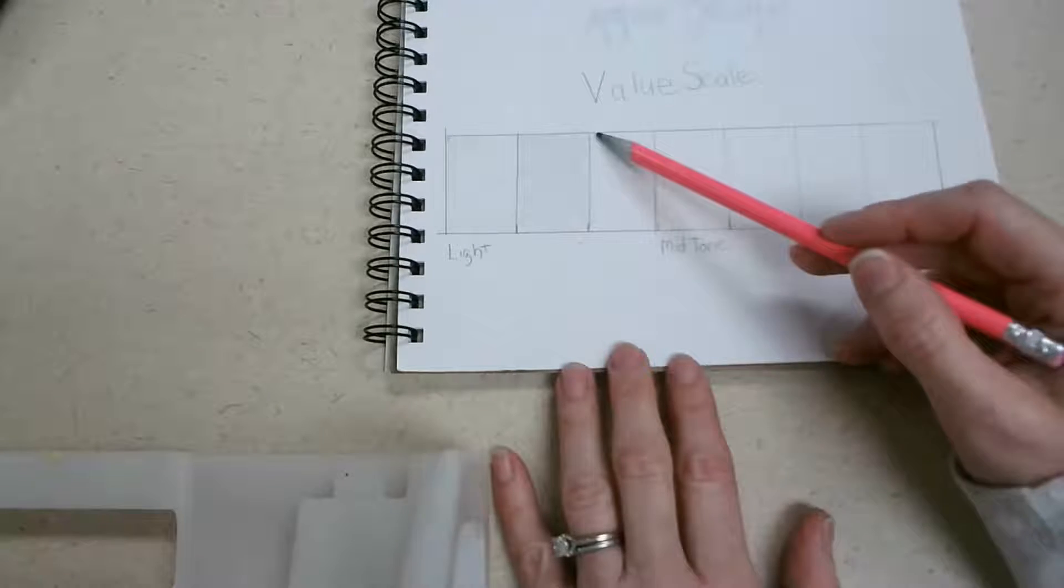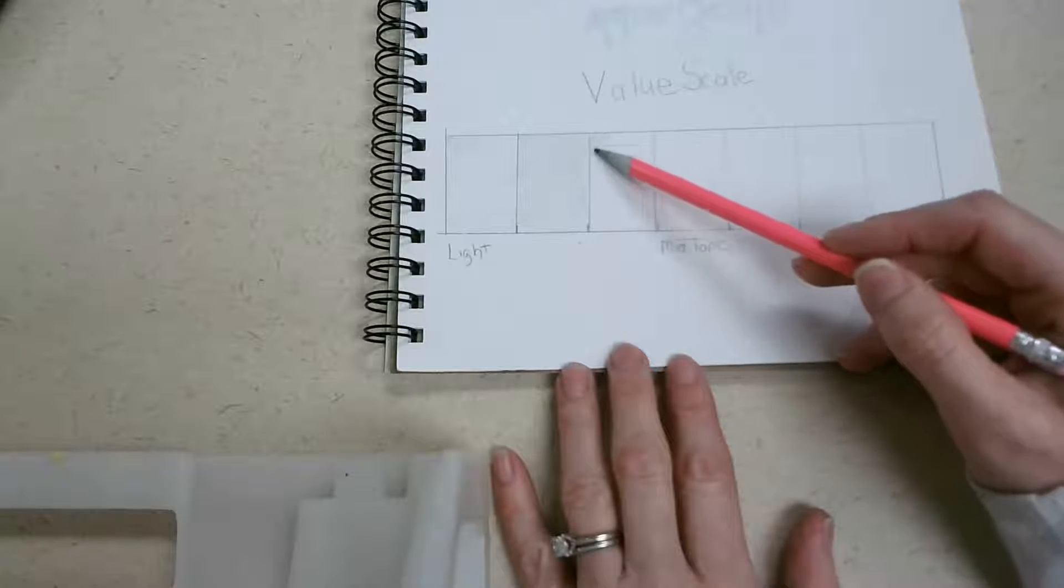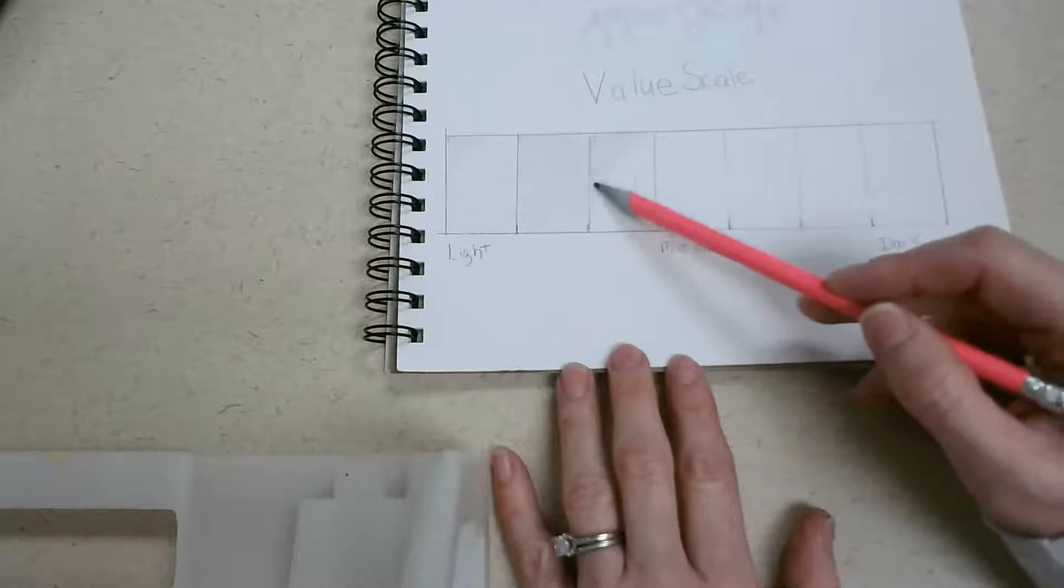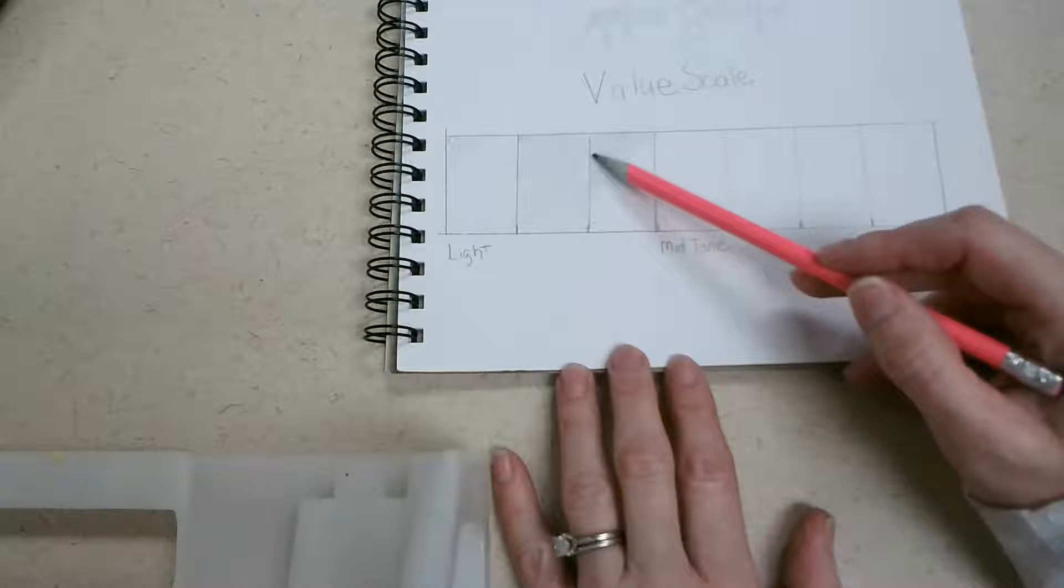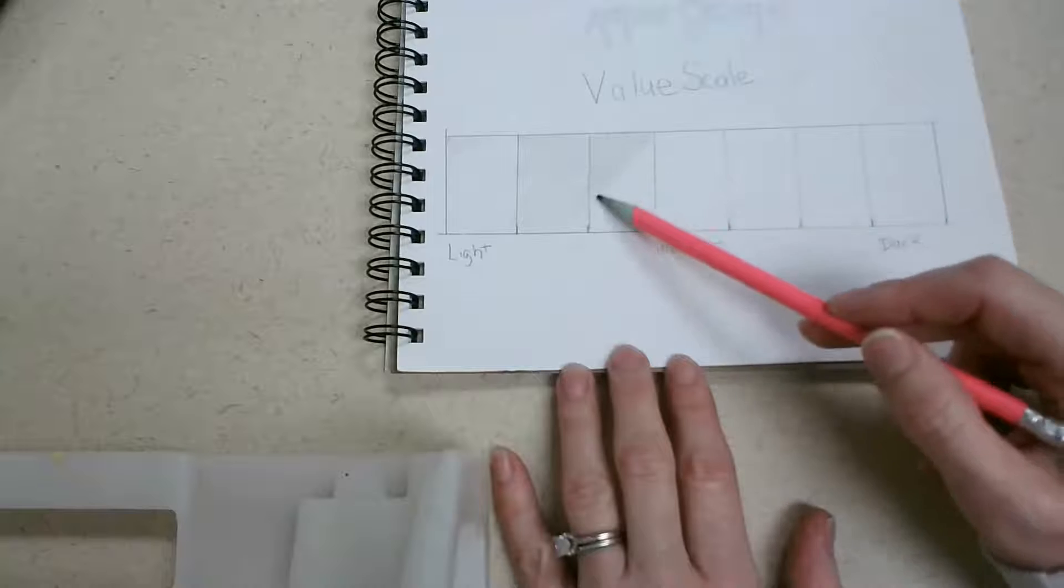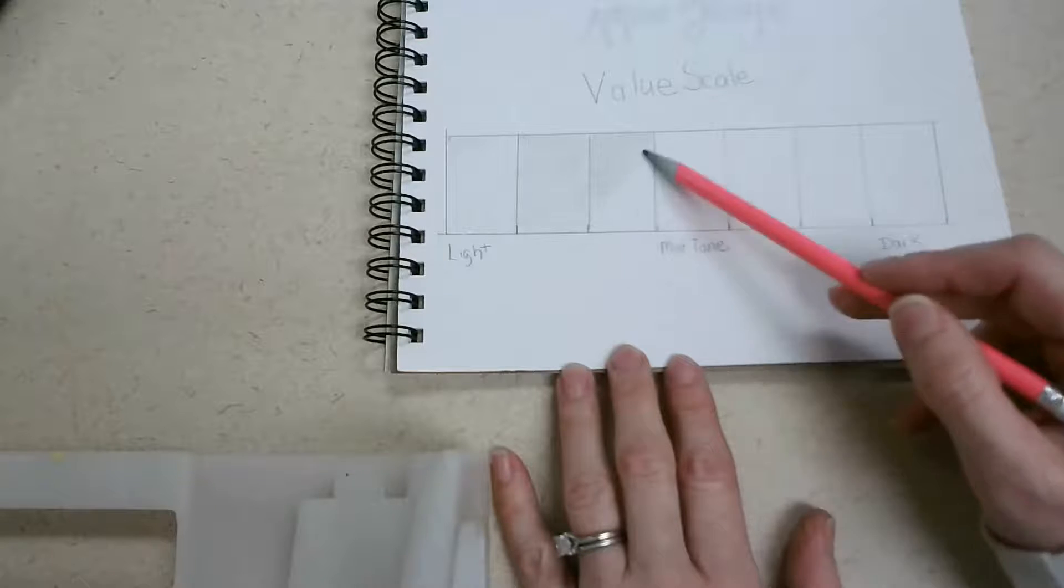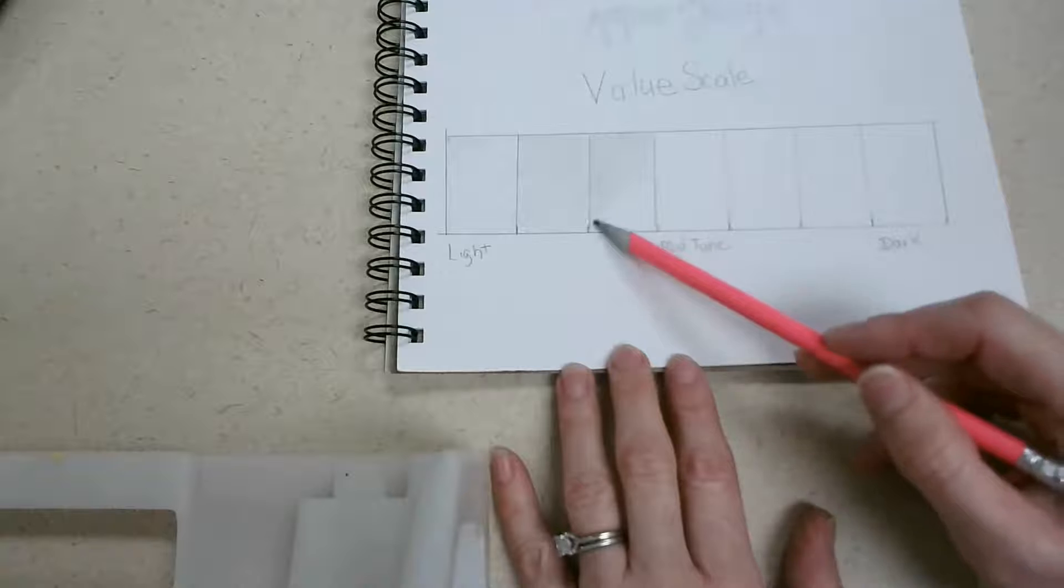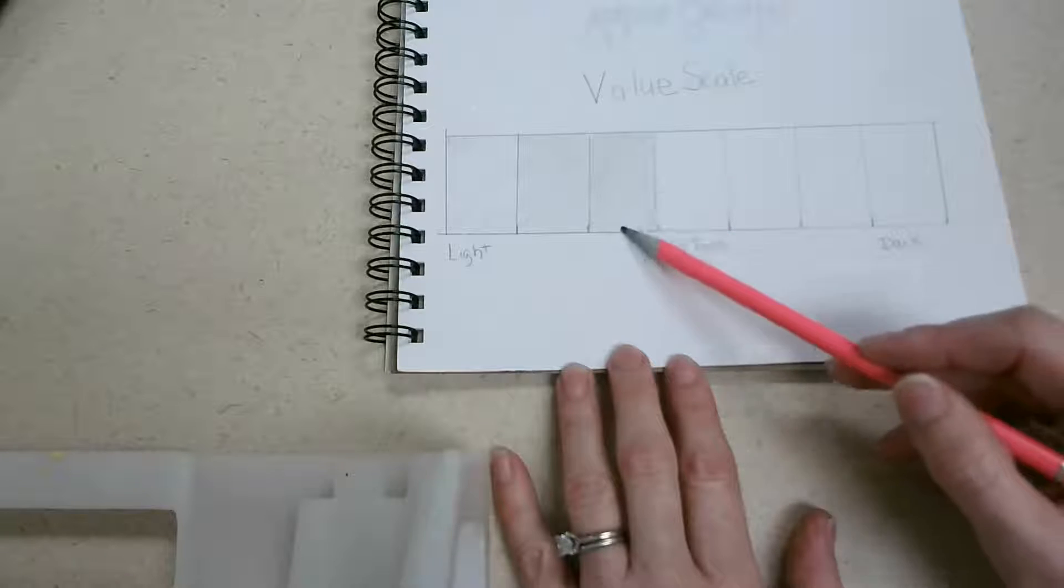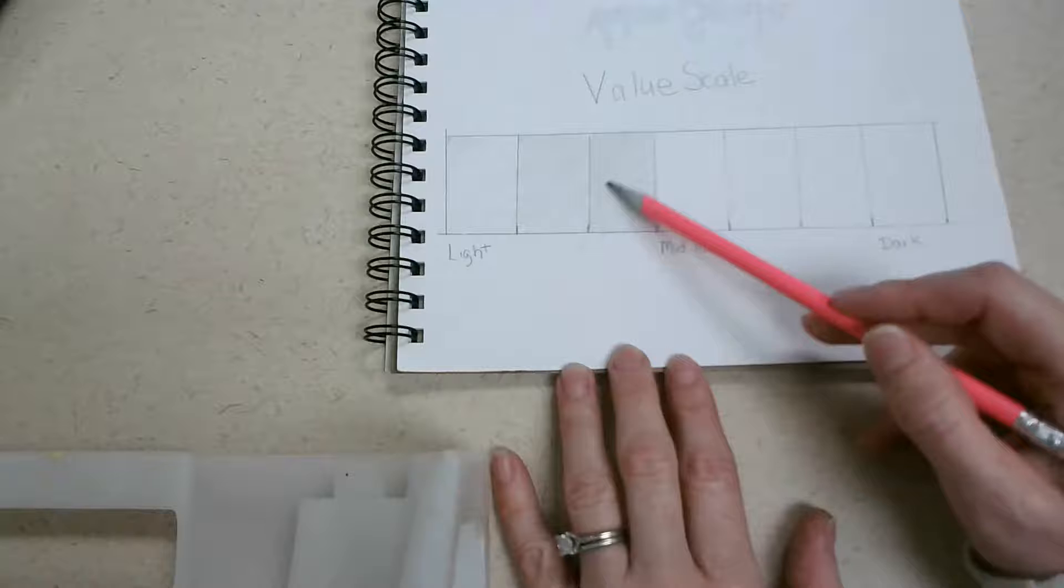Okay, so for the next one, same thing, but again you might want to apply a little bit more pressure. Just start making that change. When you get to the end, if you find that you have boxes that look very similar or kind of blend together, you don't see the difference between the two, you can always go back in and add another layer of pencil. Remember, start out light until you get it right. So same thing applies here: you want to start light, you can always add a layer on top if you need it to be darker.